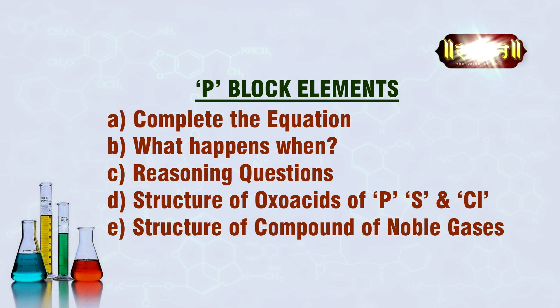In p-block elements, we have to learn the various equations, the different structures, and complete equations for the structures of the oxo acids of phosphorus, sulfur, chlorine, and all the structures given in NCERT for the compounds of noble gases. In coordination compounds, we must study the nomenclature of coordination complexes; questions are asked on isomerism, valence bond theory, and crystal field theory.